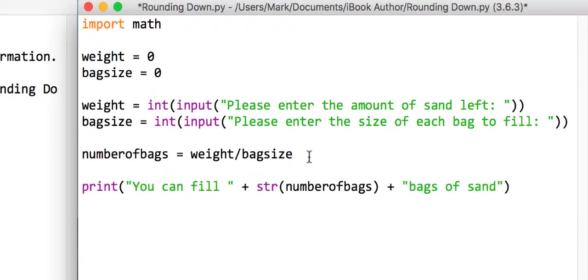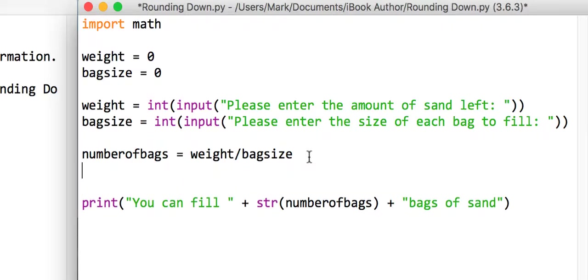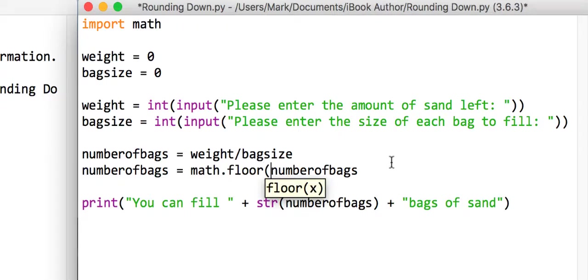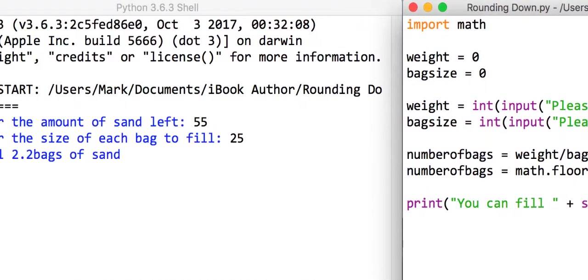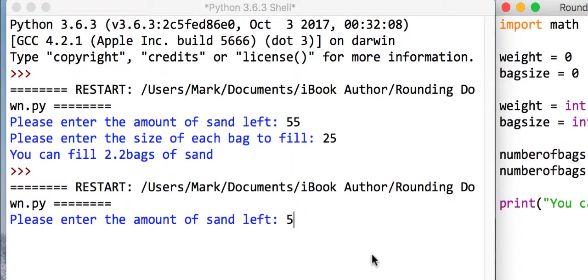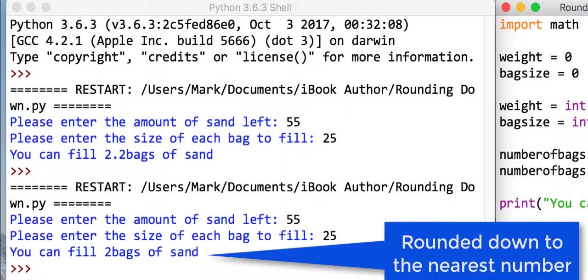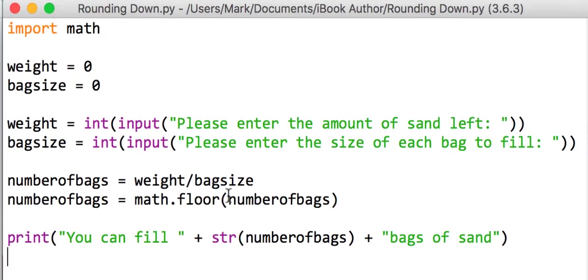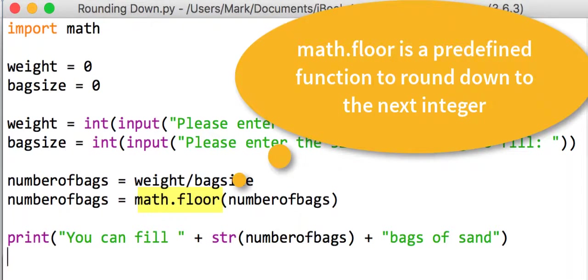After we actually calculate number of bags, we're going to say that number of bags equals whatever it was, but we'll use math.floor. If we save that program and run it with exactly the same data, 55 kilos of sand and bags of 25, we can fill 2 bags of sand. That is using the math.floor function to round down.